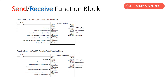One is the Send function block — it simply sends data from one PLC to the other. The other is the Receive function block — it receives data from the other PLC to the local PLC. You can use either the Send or Receive function block to implement the communications. I will attach these two function blocks, the example program, and related documents for your further study.